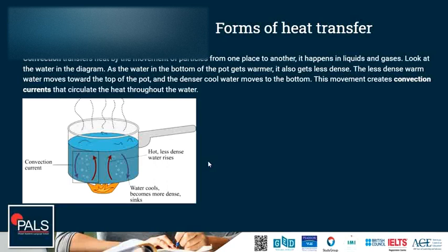As the water in the bottom of the pot gets warmer it also gets less dense. The less dense warm water moves towards the top of the pot and the denser cool water moves to the bottom. This movement creates convection currents that circulate the heat through the water.